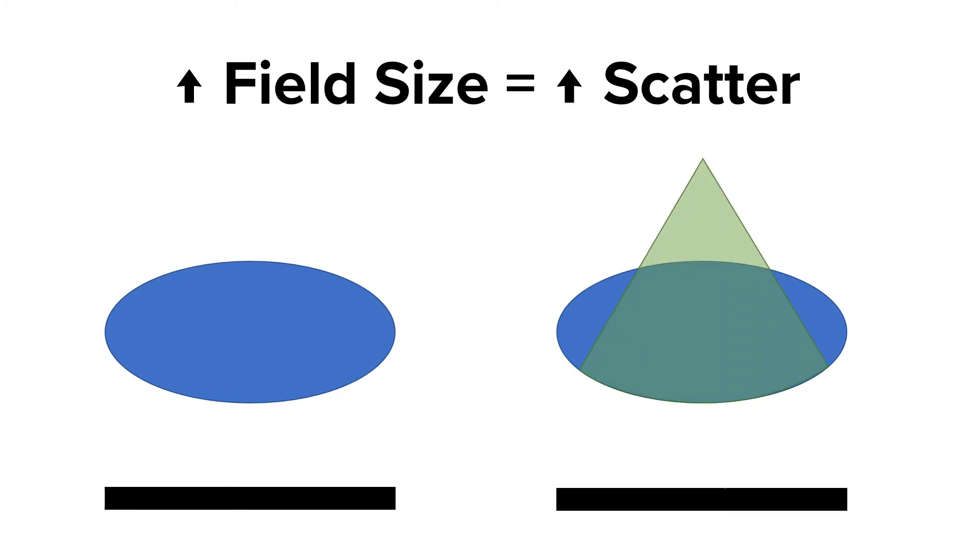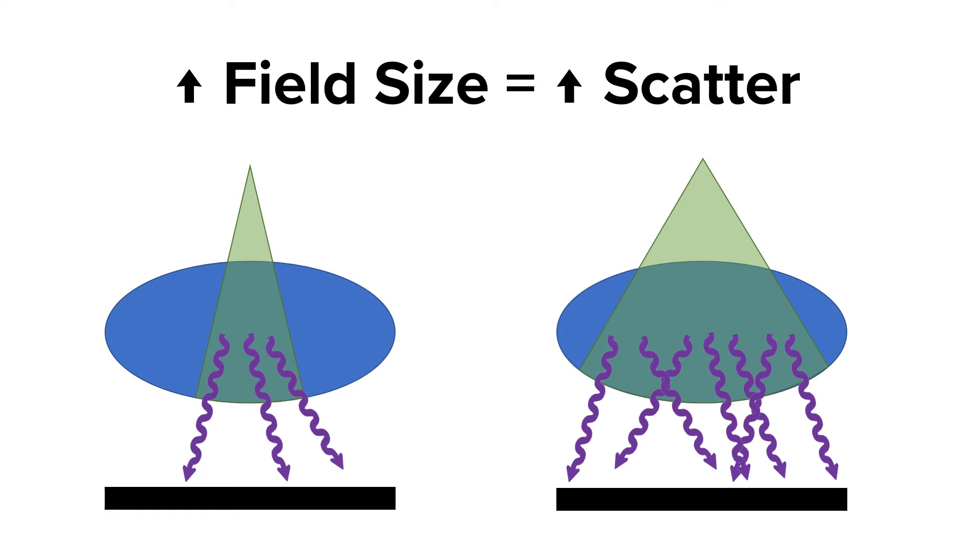Second, increased field size or open collimation increases the amount of scatter radiation that will reach our image receptor. When we tighten the collimation, we decrease the amount of X-rays that will reach the patient, thus immediately reducing the amount of scatter radiation that will be produced. If there are no X-rays interacting with the patient, then there is no scatter.